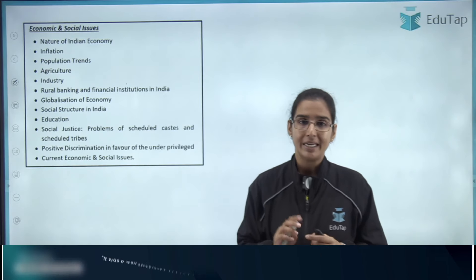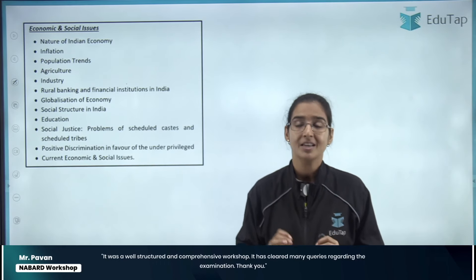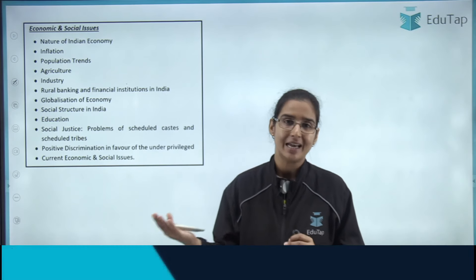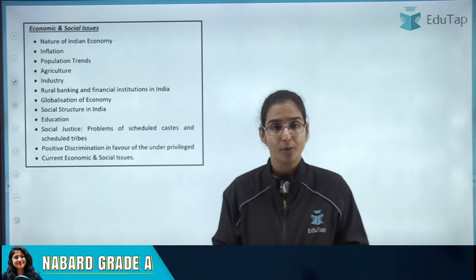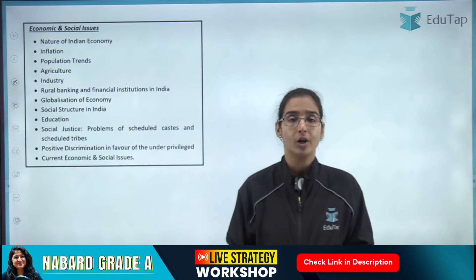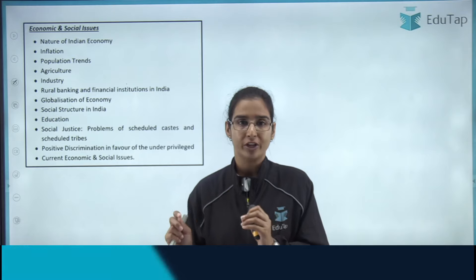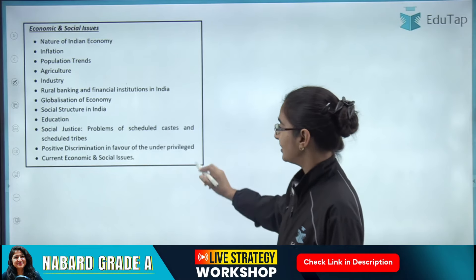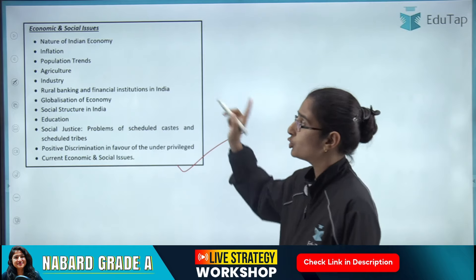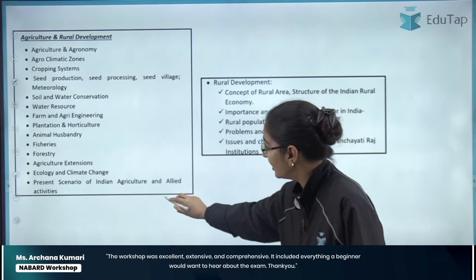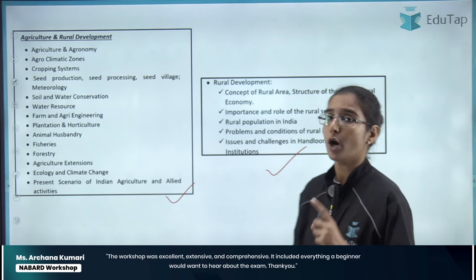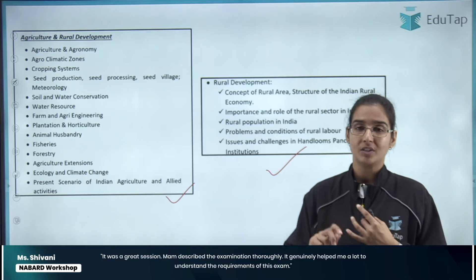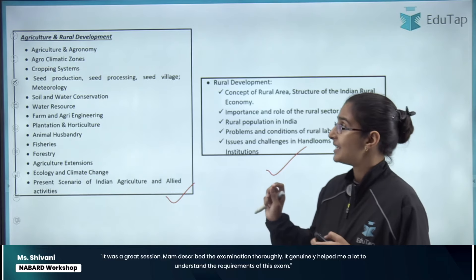Now for Paper 2, ESI and ARD — the best part is that the ESI and ARD syllabus you followed in Phase 1 is exactly the same syllabus for Phase 2. There is no difference at all. The same topics that were in Phase 1 are here for Phase 2 as well, both for ESI and for Agriculture and Rural Development. The Phase 1 and Phase 2 syllabus with respect to ESI and ARD is exactly the same.